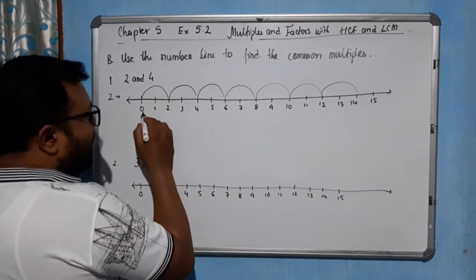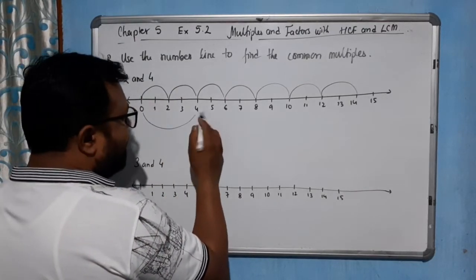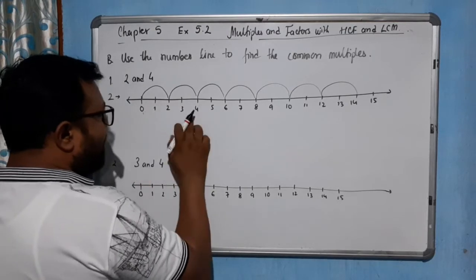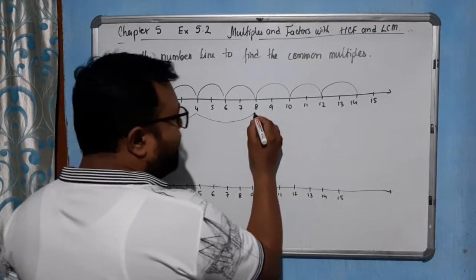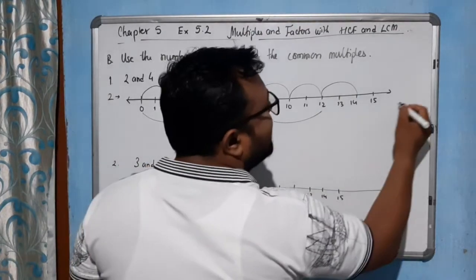Now 4, 4×1=4, 4×2=8, 4×3=12, 4×5=16. This is not here, so leave it.